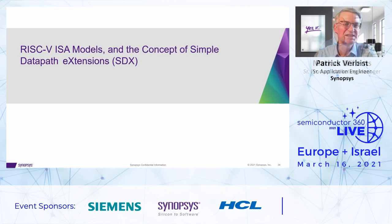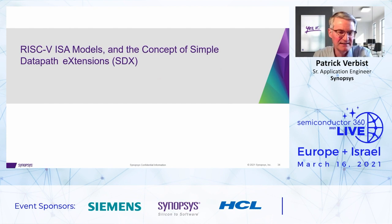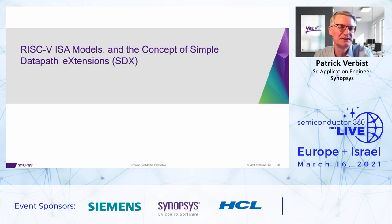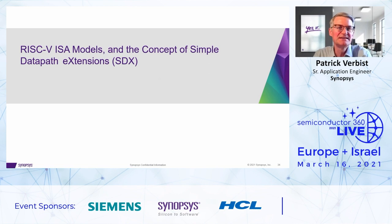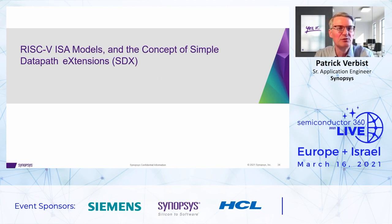With this overview of the design flow, I would like to hand it over to Patrick, who is now going to cover the example models — in particular the RISC-V processor models that we provide with the tool — and how to extend these models so that they turn into domain-specific architectures. Thanks Marcus for the introduction. I will now move into a little more detail on our RISC-V ISA models that come for free with ASIP Designer.